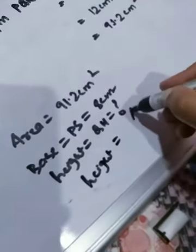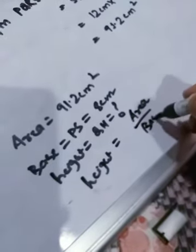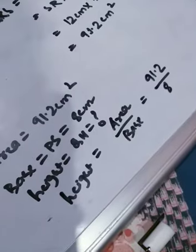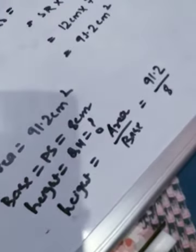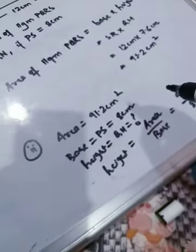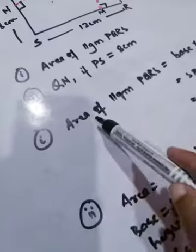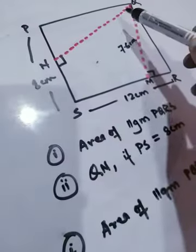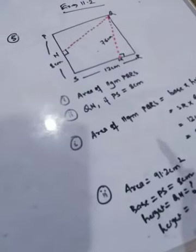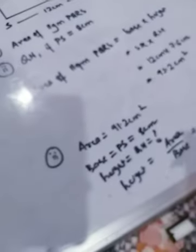The area is 91.2 and the base is 8. Dividing 91.2 by 8, we get the answer as 11.4 centimeters. So this is the required answer. In the first part, we found the area of parallelogram PQRS using the given height and base. In the second part, we found the height QN. Since both heights belong to the same parallelogram PQRS, the area remains the same. This is the entire solution of question number five. Thank you, take care and God bless.